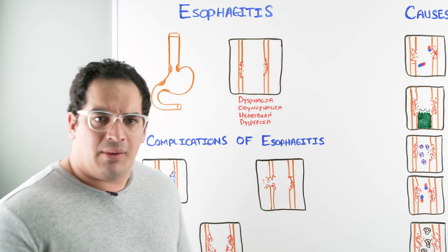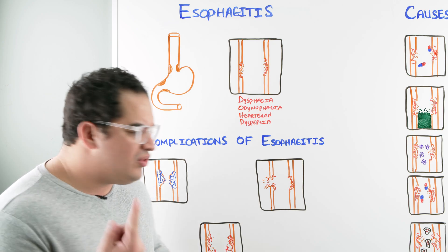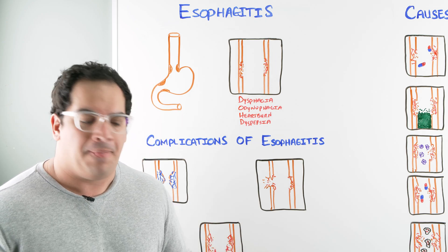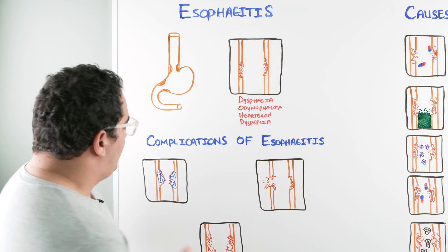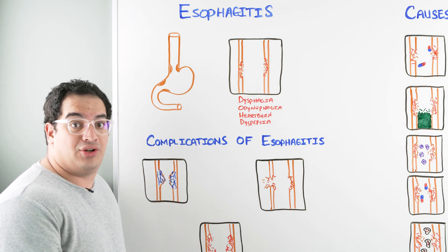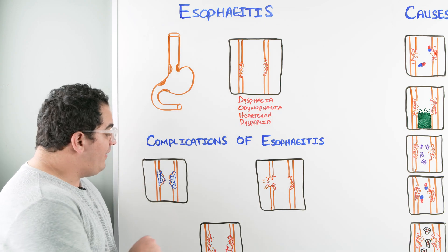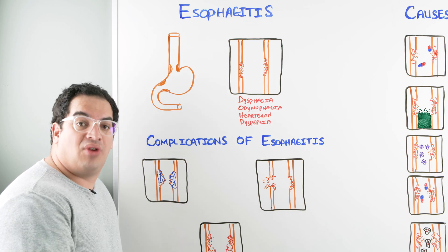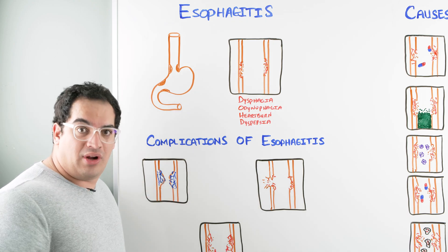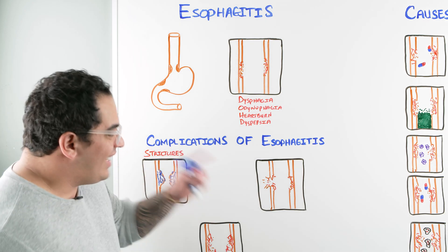Now let's think about the complications associated with esophagitis. If you inflame the esophagus chronically and significantly, that tissue is going to have to heal — it'll undergo fibrosis and then eventually you'll narrow the esophageal lumen, leading to strictures. So strictures are a potential complication.